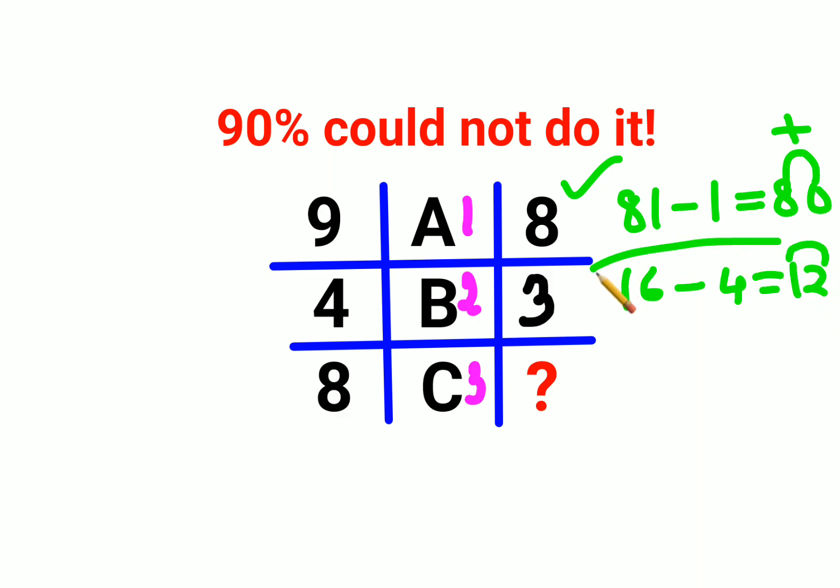So here we have 8 square which is 64 minus 3 square which is 9. So this gets you 55 and that when you add 5 plus 5 gets you 10.